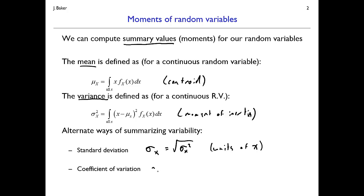The coefficient of variation is another useful measure, denoted with Greek letter delta subscript x. It's the standard deviation of x divided by the mean value of x. Since both numerator and denominator have units of x, this is a unitless measure of how large the standard deviation is relative to the mean. For example, a standard deviation that is ten percent of the mean gives a coefficient of variation of 0.1. This is especially useful for strictly positive-valued random variables, though it's not meaningful when the mean is zero.